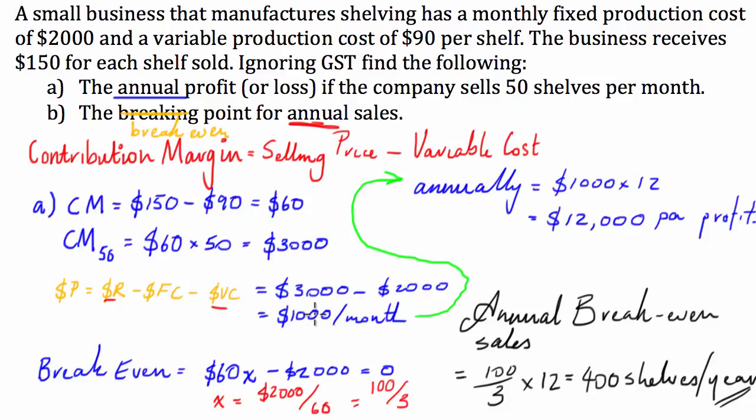So, the labor hours involved in manufacturing the product will be included in this variable cost because those labor hours will obviously increase as the number of products that we make increase. Obviously, the materials that go into the product will be part of the variable cost because the amount of materials increase as the amount of products increase.